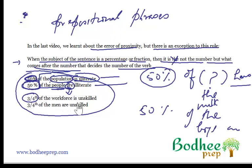So similarly is the case with 3/4. 3/4 of the workforce is unskilled. Why? Because workforce is a collective noun. It's a singular entity. Similarly, 3/4 of the men are unskilled. Why? Because men is a plural noun. And therefore, 3/4 of anything that is plural has to be plural and therefore a plural verb.